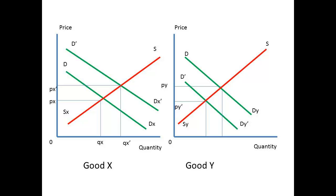Here we see our old friends the demand and supply curves. These are shown for two goods, X and Y, which we are going to assume are substitutes for each other. X is produced by labor-intensive means and Y by capital-intensive means. If consumers develop a preference for X, then demand for X rises and demand for Y falls. For X, D-DX shifts to D-DX prime. For Y, it falls from D-DY to D-DY prime.